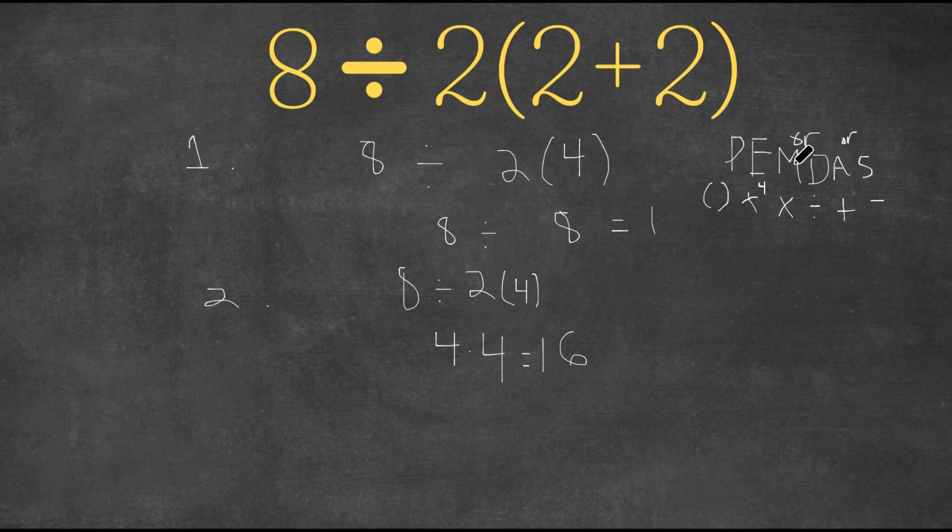And the order of this depends on which one comes first. If multiplication comes first left to right, then you would do multiplication first. And if division came first left to right, then you would do division first. And as you can see, in this problem, division comes first left to right. We have division here left to right, and then we have multiplication.